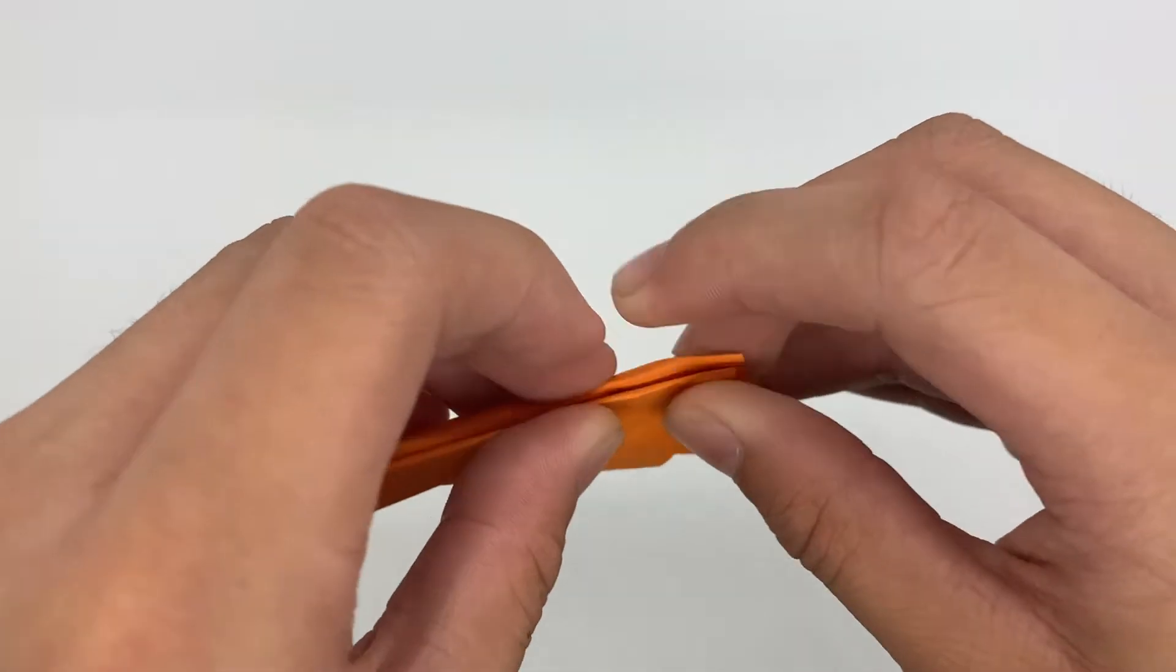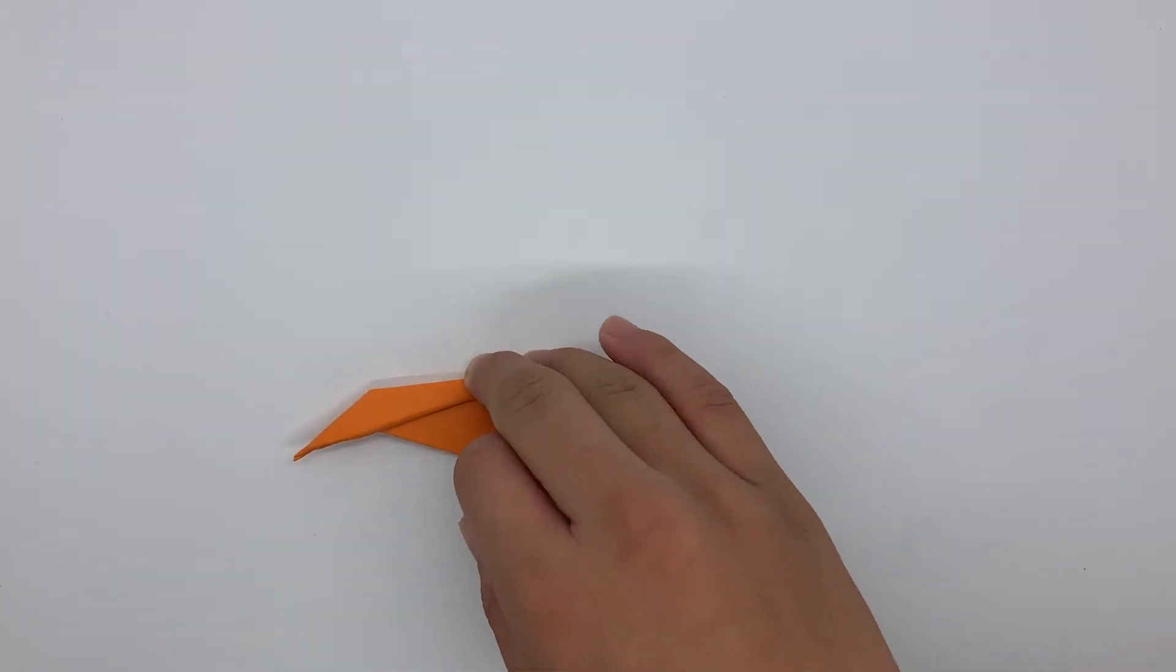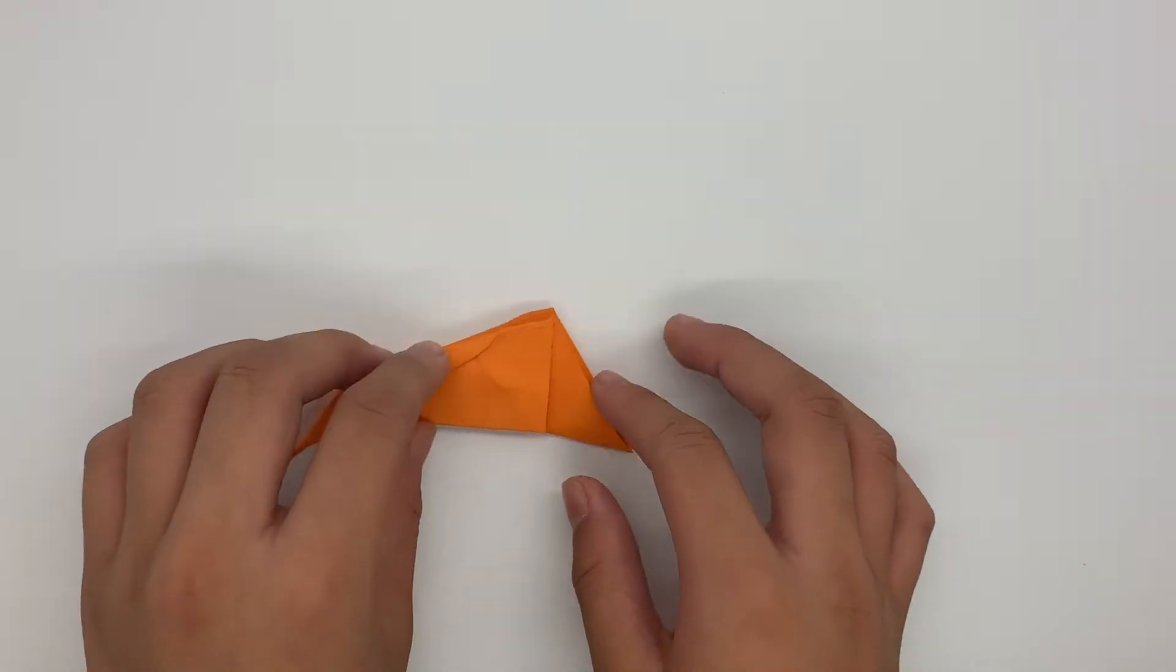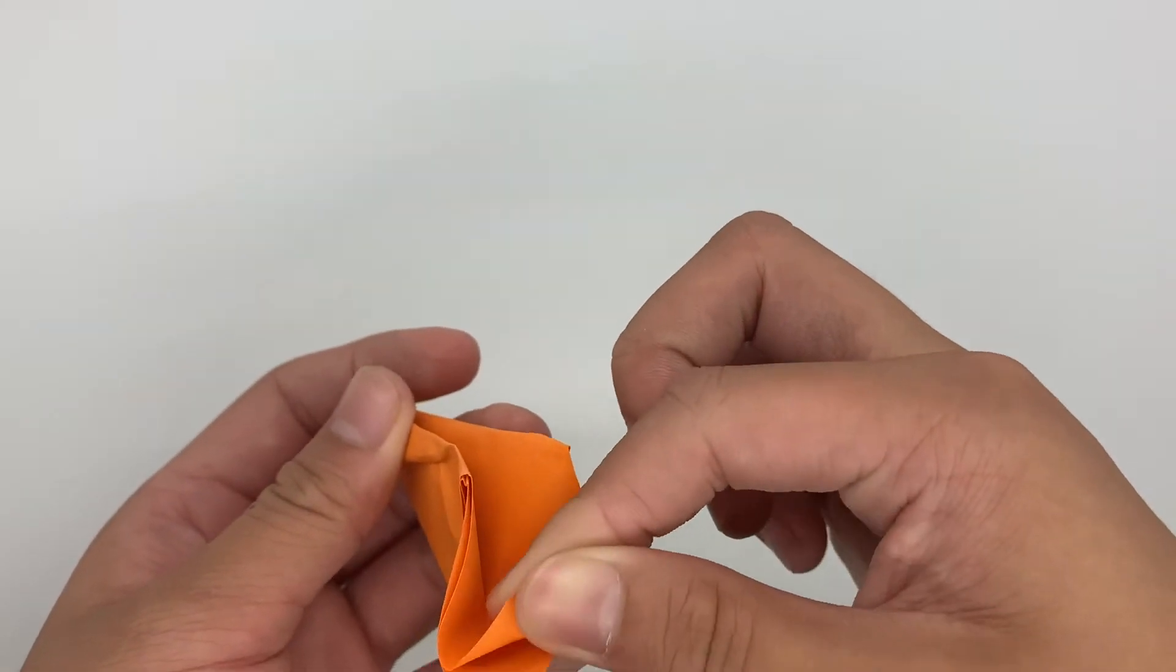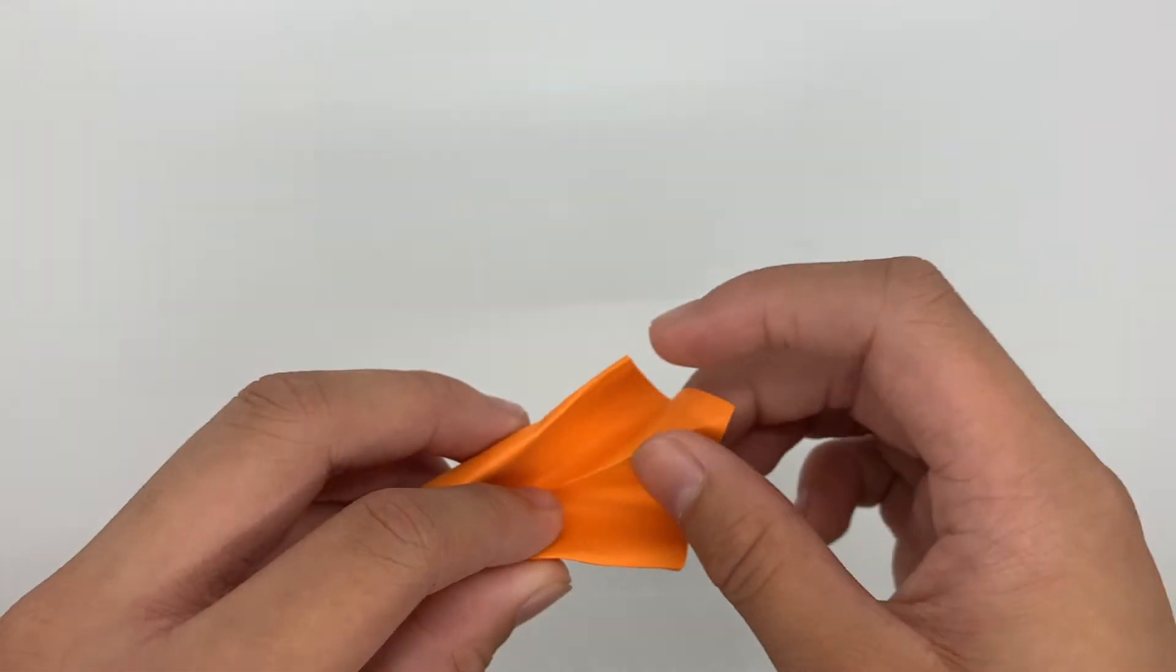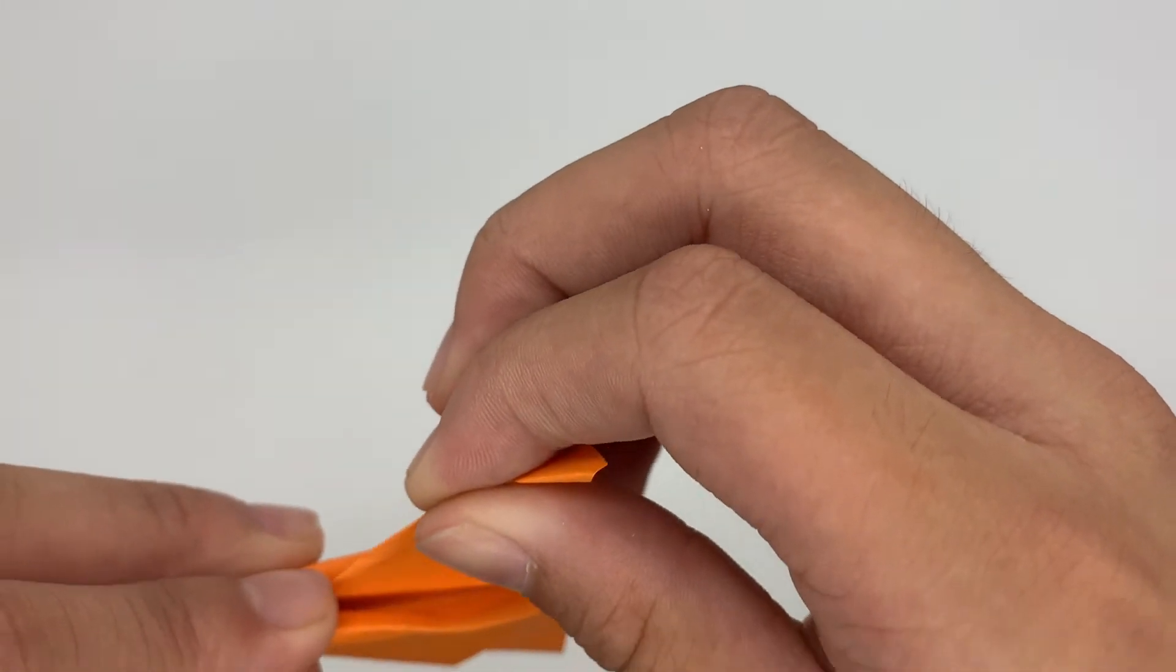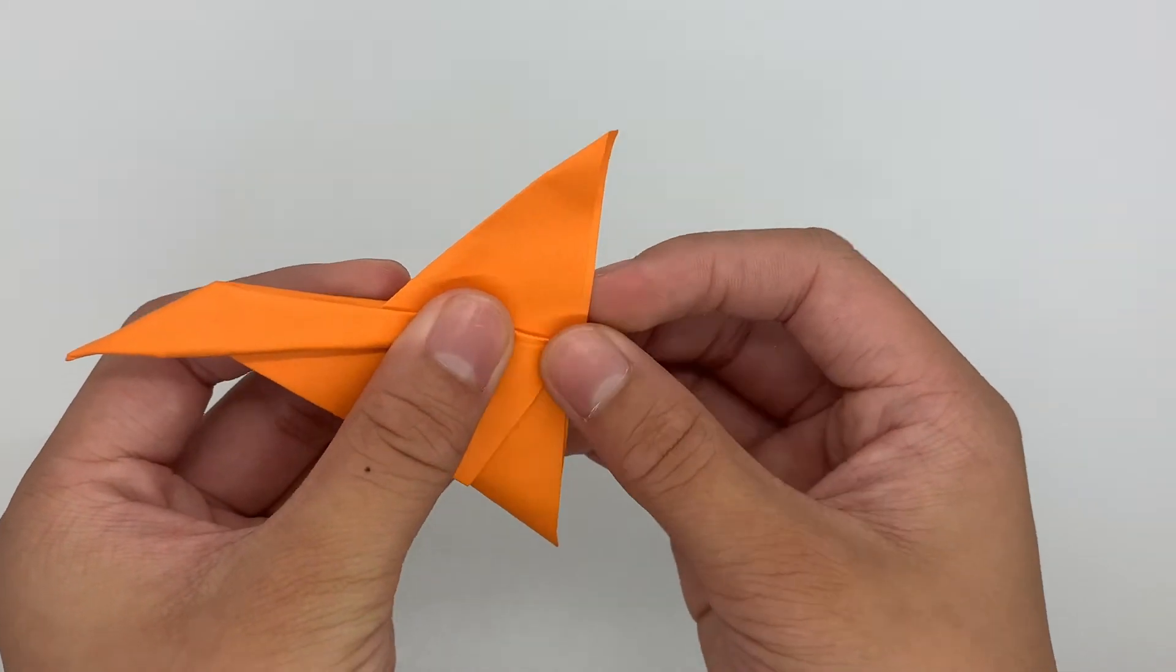And now we're going to begin making these parts. I don't know what they're called. So we're going to bring this, only one layer. We're going to bring only one layer up and make sure it at least stays down. And then we're not going to do that. We're going to bring it as up as high as we can.